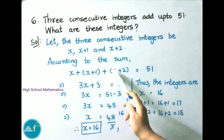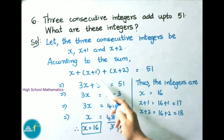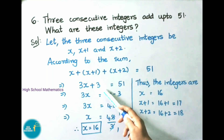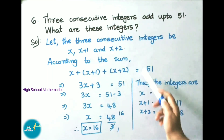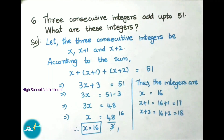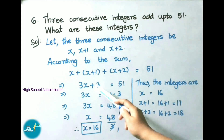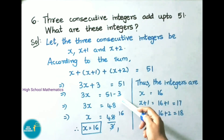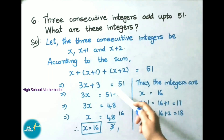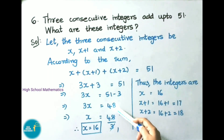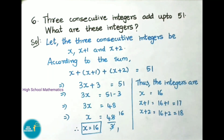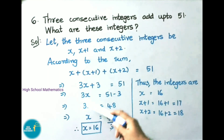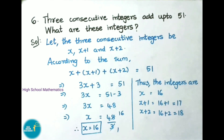Here 3 times x when we add it becomes 3x. Next 1 plus 2 is 3. So 3x plus 3 equals to 51. That implies 3x equals to 51 minus 3, which is 48. So 3x equals to 48. Now x equals to 48 by 3. Here 3 is going to multiply; on transposing it becomes divided by. So x equals to 48 by 3.